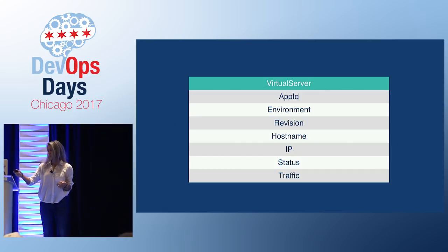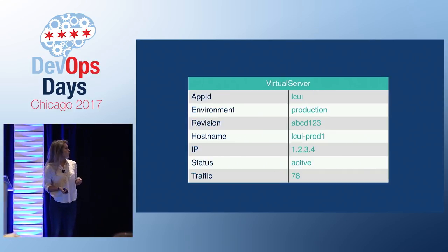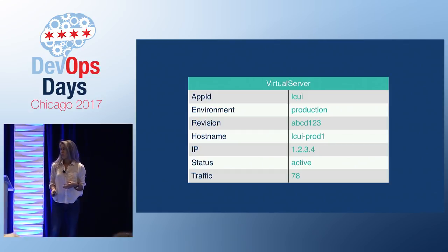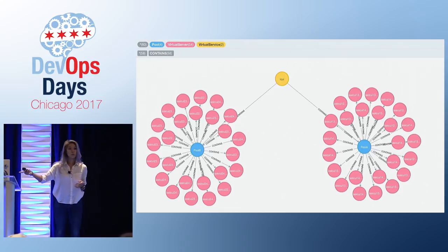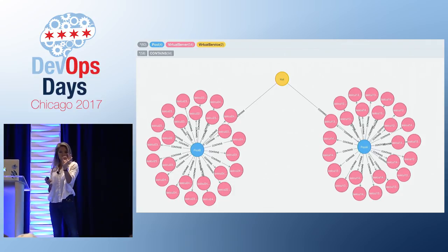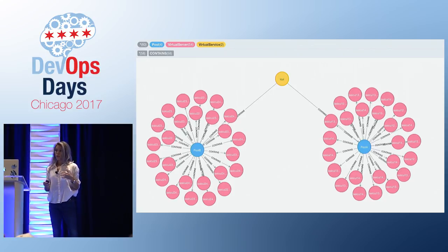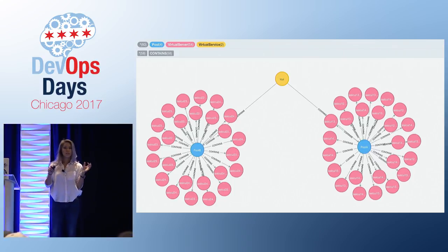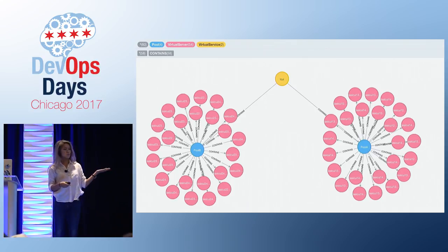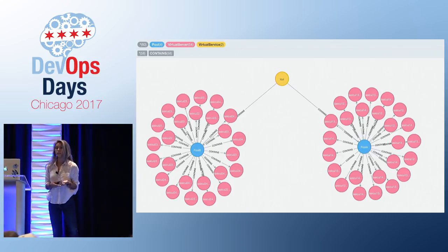The virtual server has all these properties. In this example it's LCUI, running in production, with the version and revision it's running. It's active, which means it's in the live pool. Going back to that earlier slide, hopefully it makes more sense now. Those virtual servers are the pink nodes — they all have properties with IP, hostname, and live or dark status. If we group these servers together by app ID, state, and hostname naming conventions, we can split them into two pools. Then if we group the pools by app ID and environment, we get this concept of a virtual service. This allowed us to automate our data center deployments and set up a lot of monitoring and alerting.